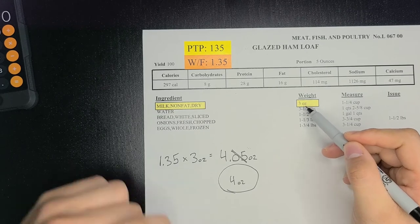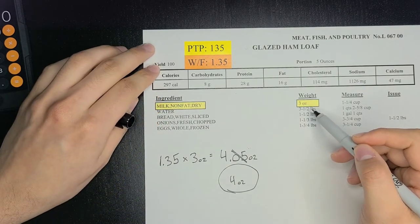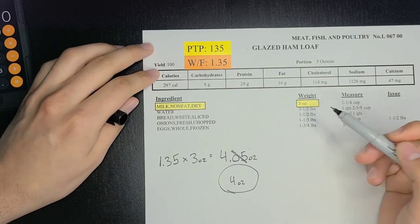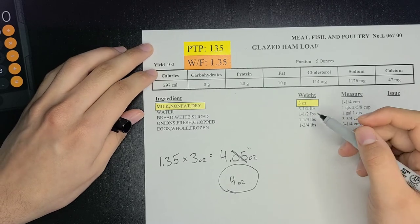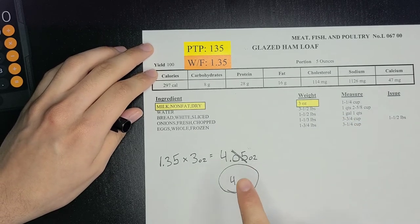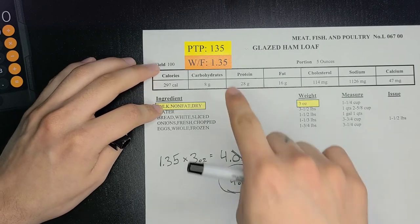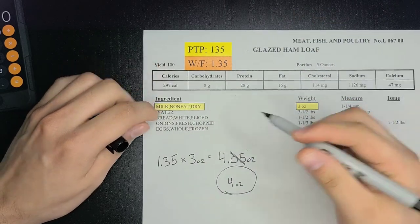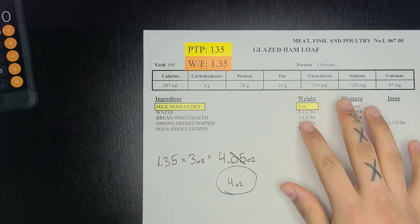So with the 3 ounces you can make a hundred portions, which is what the standard recipe card yields to. And then with the 4 ounces of the nonfat dry milk you can make the 135 portions of your glazed meatloaf.